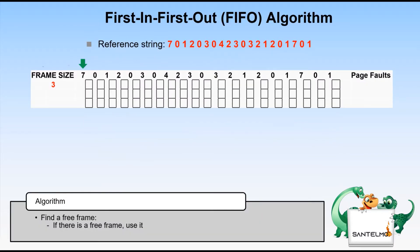Let's apply that to our example. We are given a reference string of 7, 0, 1, 2, 0, 3, 0, 4, 2, 3, 0, 3, 2, 1, 2, 0, 1, 7, 0, 1. We will apply the first in first out page replacement algorithm to get the number of page faults using frame sizes of 3, 4, 5, and 6.